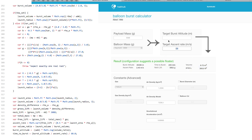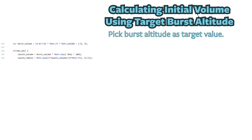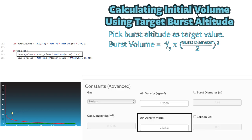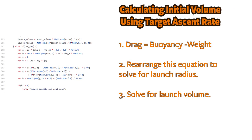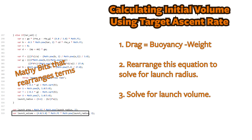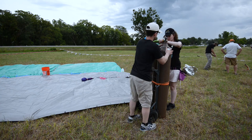The first item calculated is the volume — the initial fill volume your balloon needs. If you pick a burst altitude as your target, the code takes the known burst diameter from the manufacturer, determines the volume of the balloon at burst, and uses a logarithmic equation describing how pressure changes over altitude. Taking the ideal gas equation and rearranging, we can find the fill volume. The H value in this equation is what HabHub calls the air density model — also known as the scale height — a number between 7,000 and 8,000 kilometers; unless you know it for your location, leave it as the default. If you choose a target ascent rate, the code assumes no acceleration, meaning constant ascent rate, where drag equals buoyancy minus weight, and rearranging solves for the initial fill volume. If you have a flow meter on your gas tank, you can use this to calculate when your balloon has reached the proper fill volume.